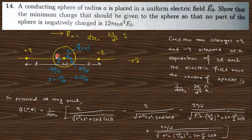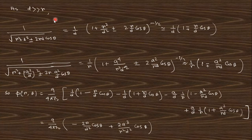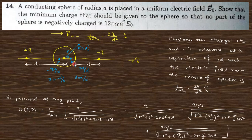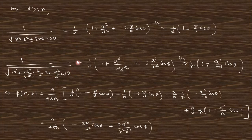There are now four charges in total. At any point P with position coordinates (r, θ), the potential is the sum of contributions from all four charges. Taking the assumption that d is very much greater than r — required for a uniform field in the region near the center of the sphere — simplifies the potential expression significantly.